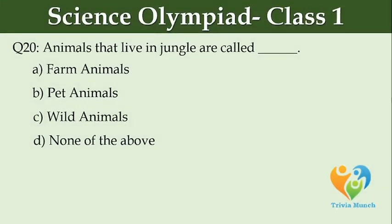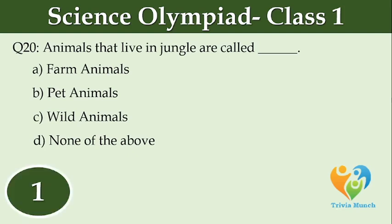Animals that live in the jungle are called dash. Option A: Farm animals. Option B: Pet animals. Option C: Wild animals. Option D: None of the above.